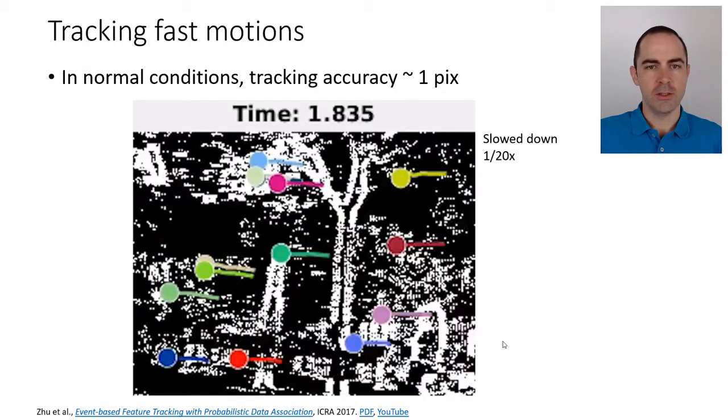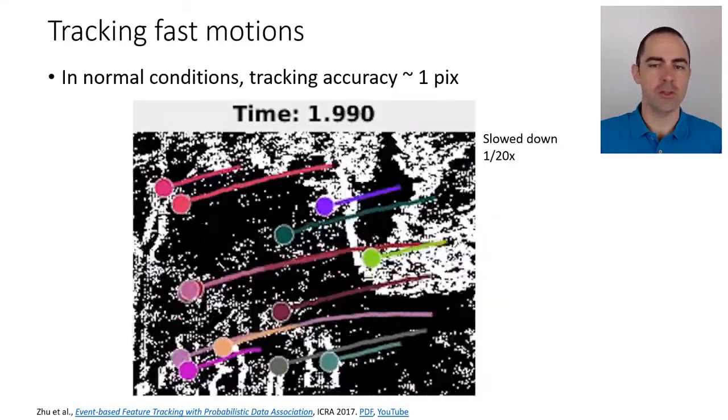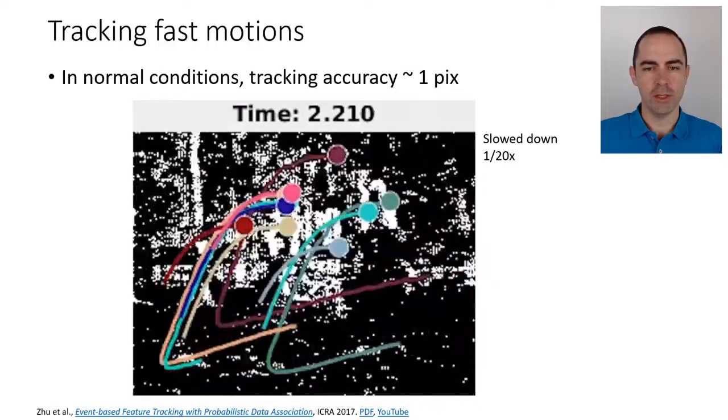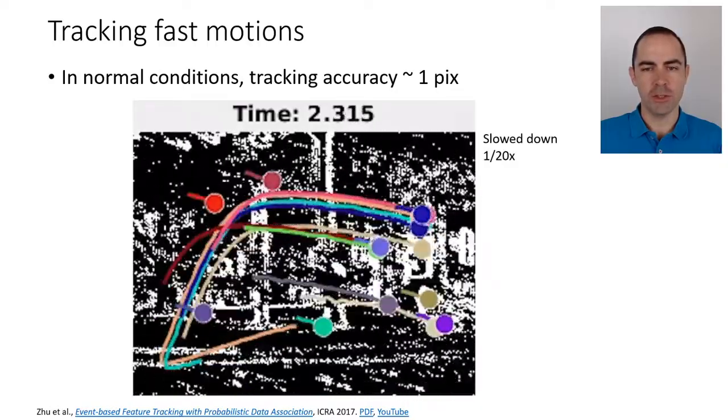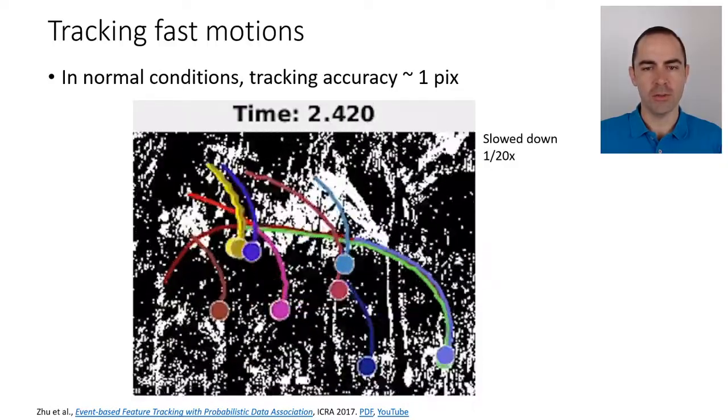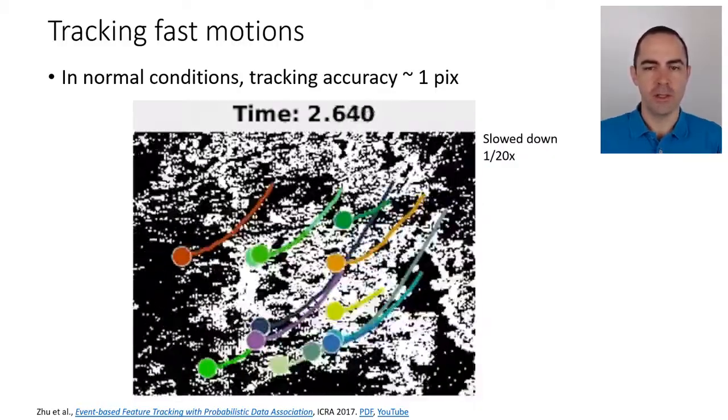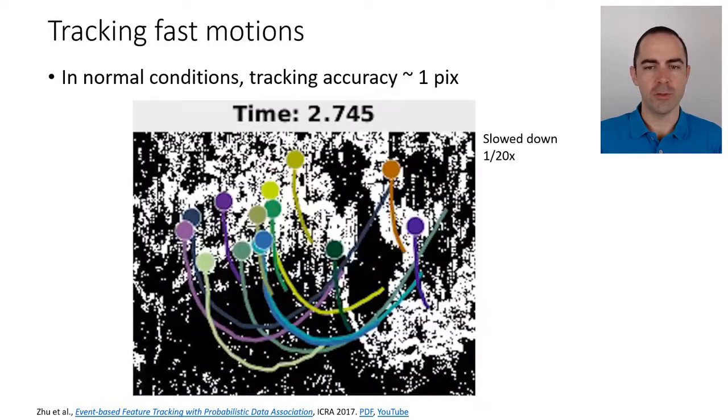Let's take a look at some experiments with the video. This is actually a fast motion, it all plays in less than one second, but here it's slowed down to see the features. On the background we see in black and white the events, the edge patterns. In colors and circles we see the features being tracked and reinitialized every time that some of them are lost because they are moving out of the field of view.